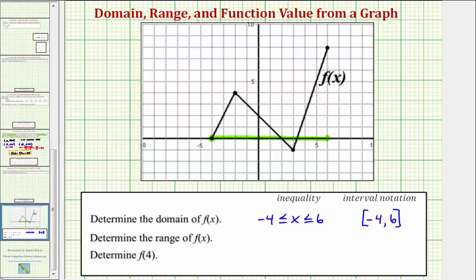What I mean by that is notice how the lowest point on this function is this point here where the output or function value would be negative one. And because this point is closed, negative one is in the range of f of x.